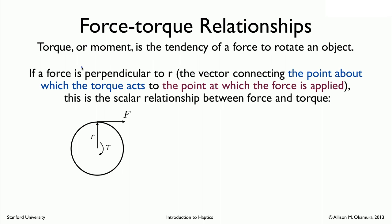Now we're going to be dealing with our Hapkit, and so we're going to look at the very specific case when you have a force that's perpendicular to the radius of one of your pulleys. And so that radius is called r, and you can think of it as the vector that connects the point about which the torque acts to the point at which the force is applied. The torque is acting here at the center, and the force is being applied here at the outside of, in this case, you can think of it as a round pulley. And you get a nice scalar relationship between force and torque that looks like this: tau equals F times r.